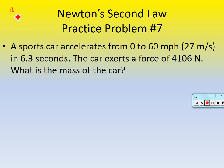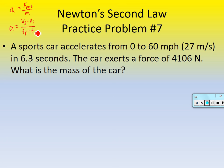Practice problem seven: we have two ways to find acceleration — Newton's Second Law rearranged, or acceleration equals change in velocity over change in time from last chapter. A sports car accelerates from zero to 60 miles per hour, which equals 27 meters per second, in 6.3 seconds. The car exerts a force of 4,106 newtons. We need to find the mass of the car.